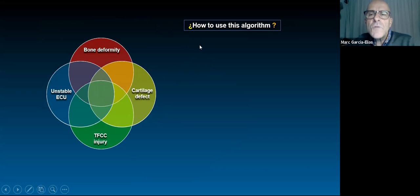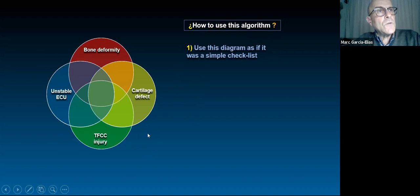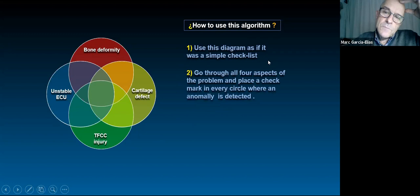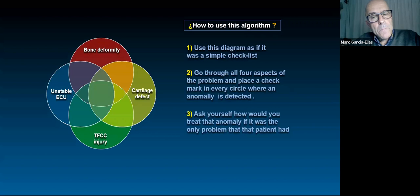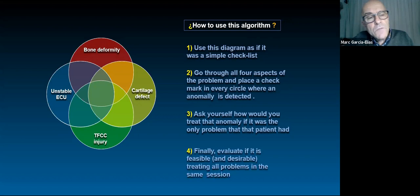The algorithm is as simple as a checklist — like a pre-flight checklist for an airplane. You go through all aspects of the problem and place a check mark in every circle where an anomaly is detected. Then you ask yourself how you would treat that anomaly if it were the only problem in that patient. Finally, evaluate whether it is possible, feasible, and sometimes desirable to treat all problems in the same session.